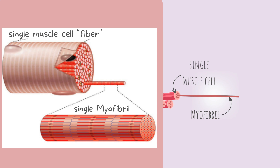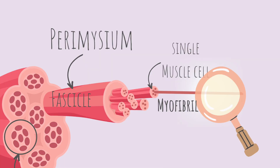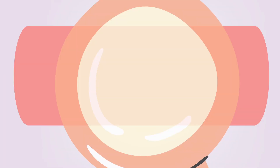Notice that the myofibril has these zigzags and lines on it. These are actin and myosin proteins. Let's take a close look at the myofibril because this is where the action happens. This is where the muscle contraction takes place within each single myofibril.